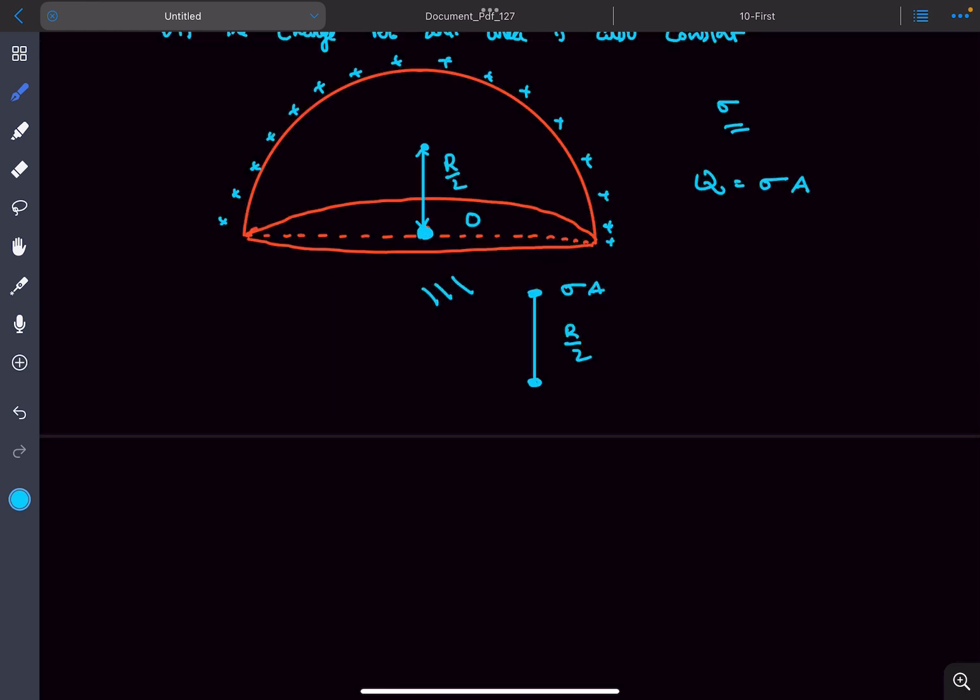We can replace this entire shell with a point charge of magnitude σA, placed at a distance R/2 from the vertex.